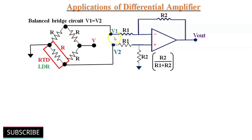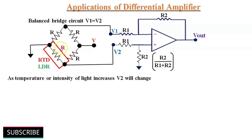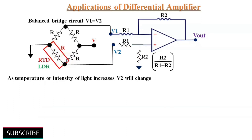One resistor is a light dependent resistor (LDR) or resistance temperature detector (RTD) to detect either light intensity or temperature level. The bridge is balanced in normal conditions when V1 = V2. If temperature or light intensity increases, the resistance of the RTD or LDR changes, causing the voltage at input V2 to change. The output voltage then becomes a linear function of the changes in the active leg of the resistive bridge, allowing detection of temperature or light intensity. This configuration can also be used to find unknown resistance in a resistive bridge network.